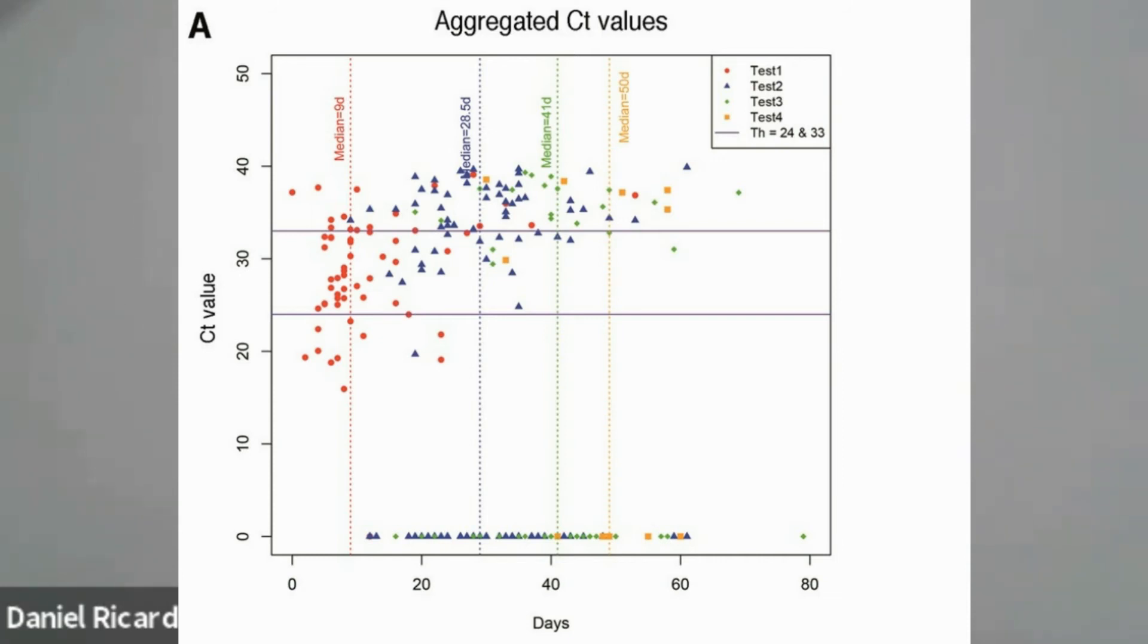In our study, we followed 118 hospitalized patients applying periodic RT-PCR tests even after discharge. We analyzed how many days were needed to present cycle threshold values of 33, which is one of the thresholds to consider viral particles as not active, that is, not infectious. Our population had a median age of 49 years with a male majority.